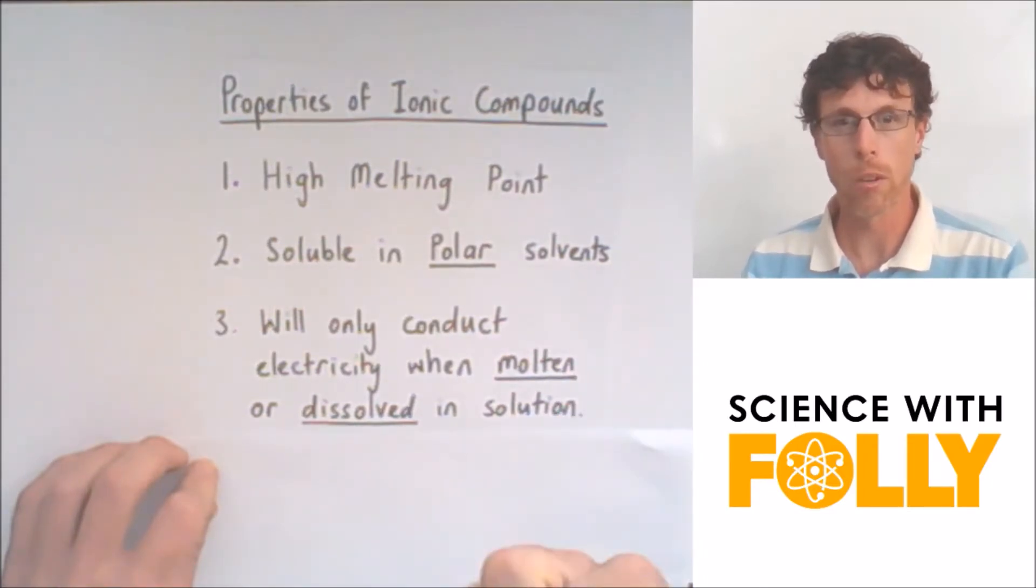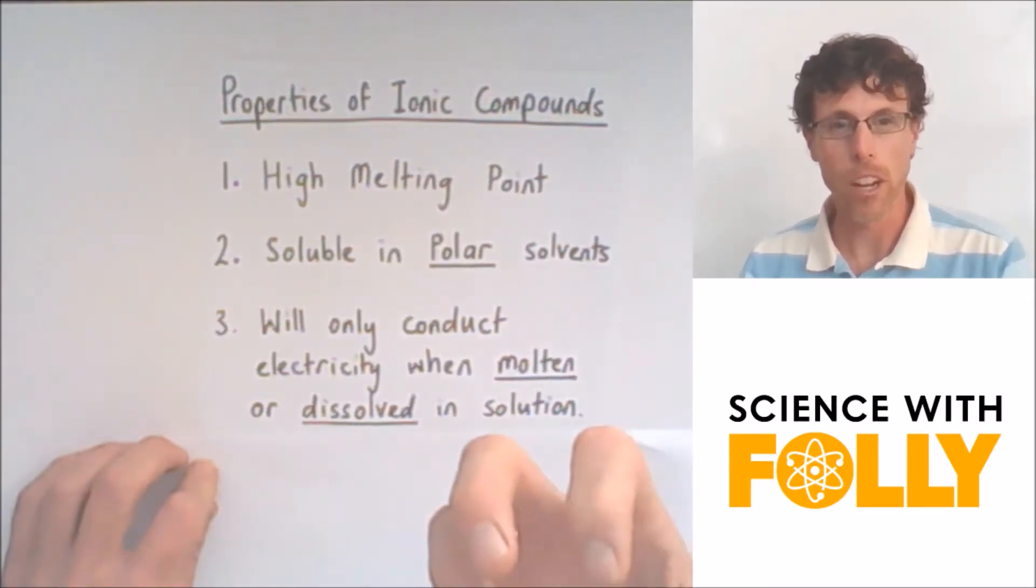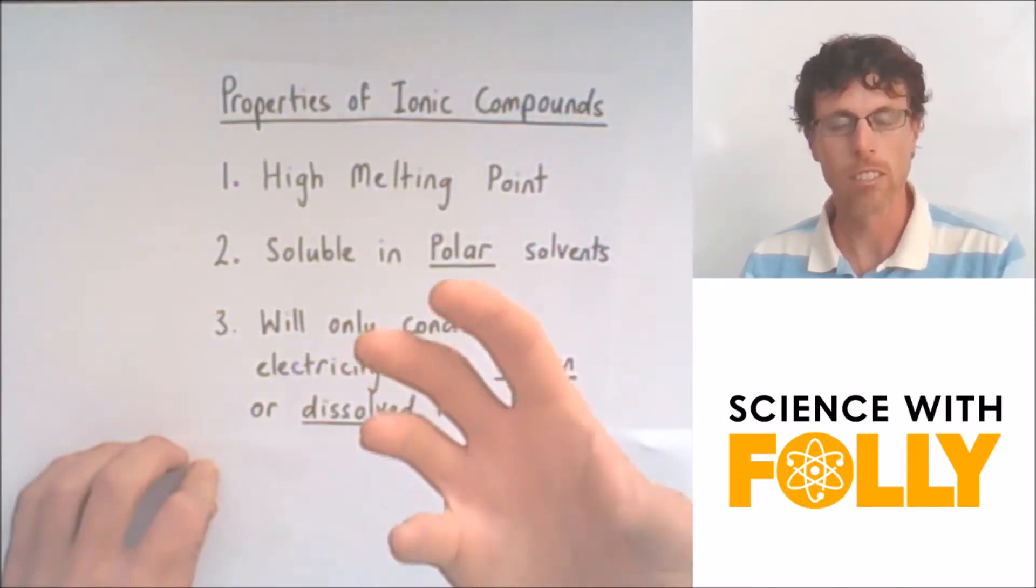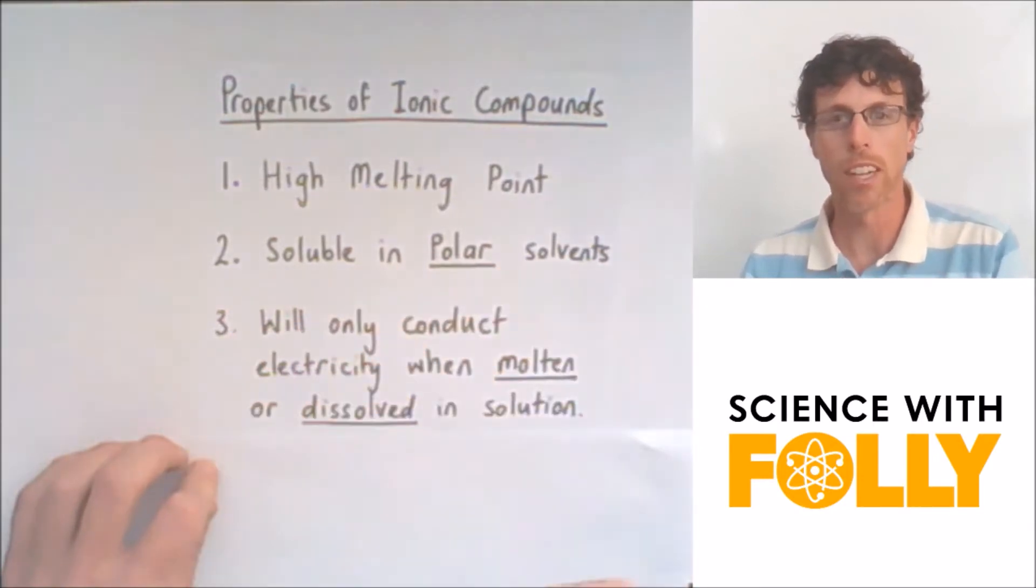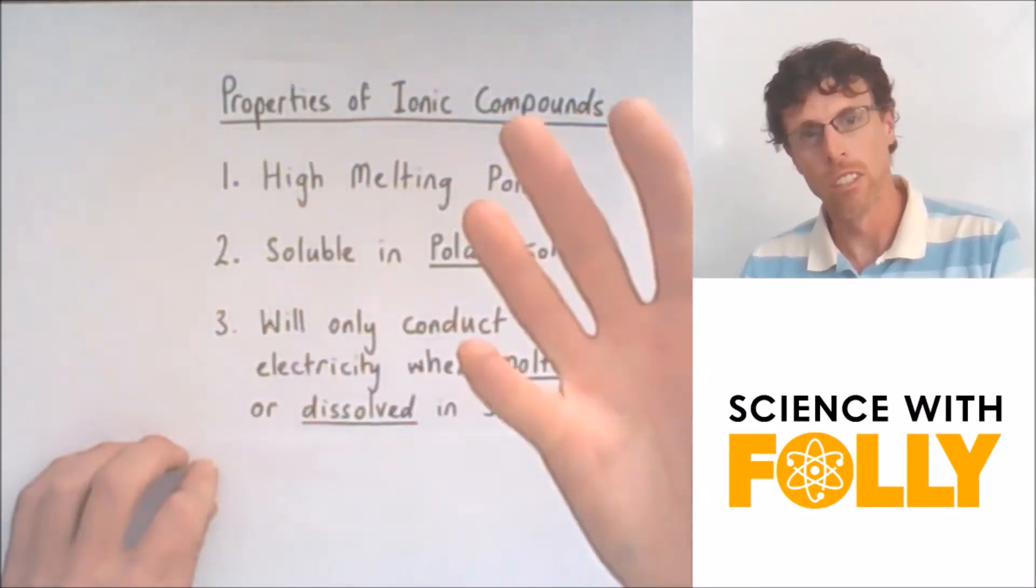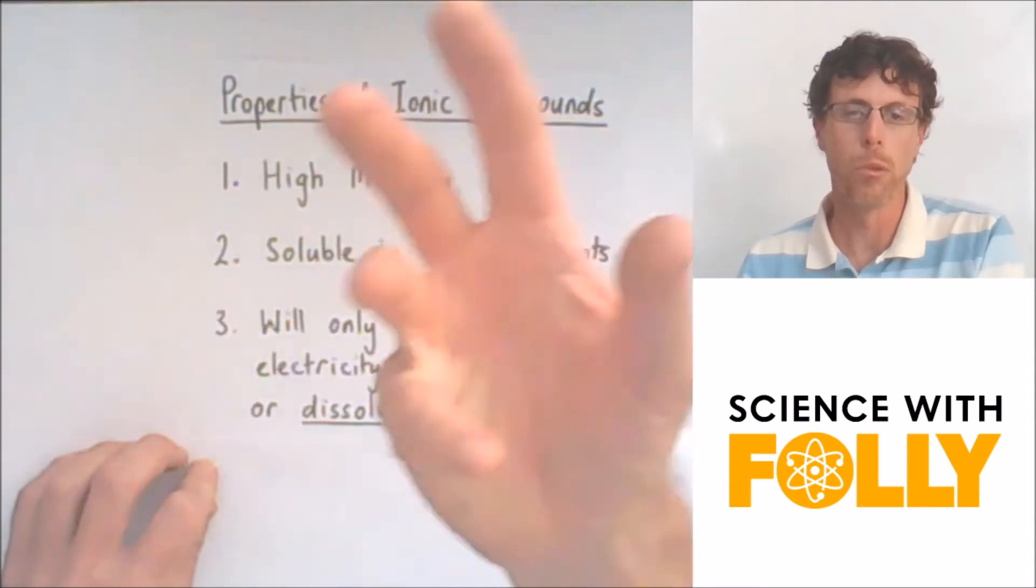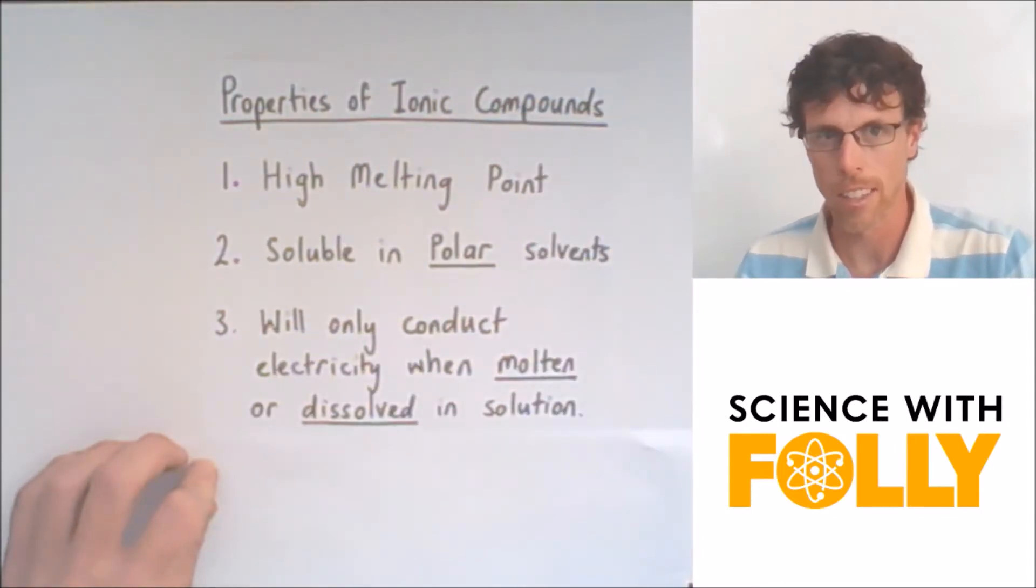When an ionic compound is solid, the charged particles, which are the ions, are locked in position and cannot move. But when it's molten, they can move around and conduct electricity, or if it's dissolved, they can also move around in solution and conduct electricity.